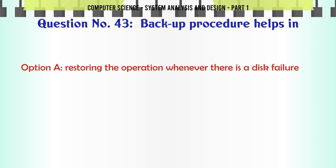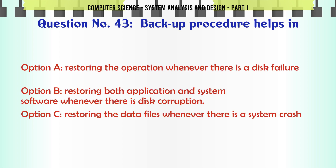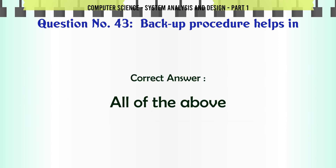Backup procedure helps in: A. Restoring the operation whenever there is a disk failure. B. Restoring both application and system software whenever there is disk corruption. C. Restoring the data files whenever there is a system crash. D. All of the above. The correct answer is: All of the above.